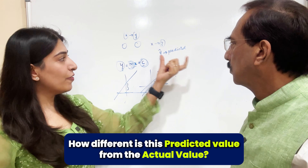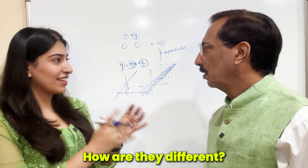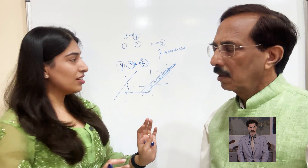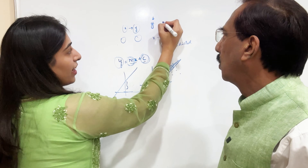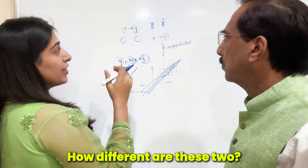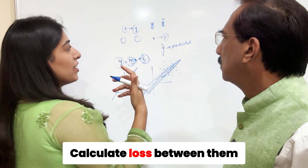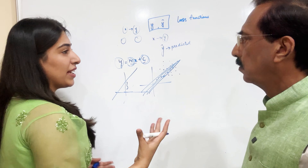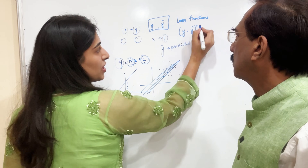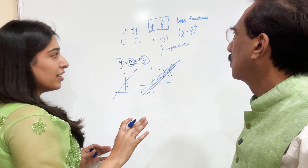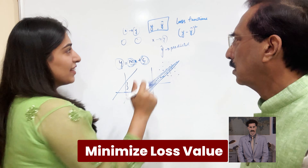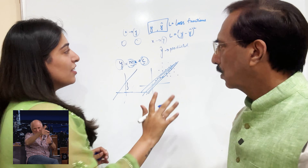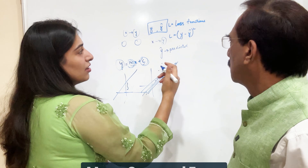This predicted value will obviously be different from the true value because we started with random values of M and C. So I can find how different the predicted value is from the actual value — what is the error between them? What is the loss between the actual Y value and the predicted Y value? I can use different loss functions. I can take Y minus Y-hat, or the square of that to make sure it is not negative. Our goal will be to minimize this loss — if I call it L, my goal is to minimize L as close to 0 as possible. This particular formula is called Mean Squared Error.